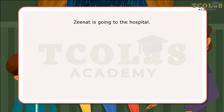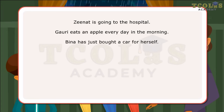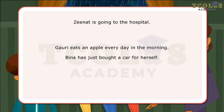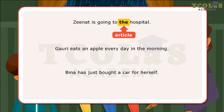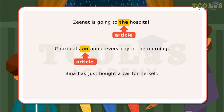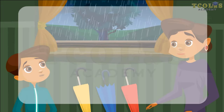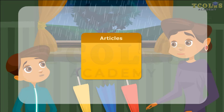Zenith is going to the hospital. In the first sentence, the is an article and it refers to a particular hospital. In the next sentence, an is an article and refers to any single apple. In the third sentence, a is an article and refers to a single car which is not specific. There are only three articles in English: A, An, The.